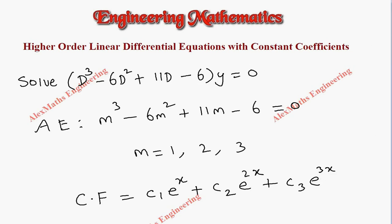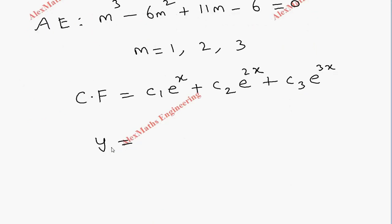On the other side we have 0, therefore there is no particular integral. So when we write the complete solution y = CF + PI, there is no PI.